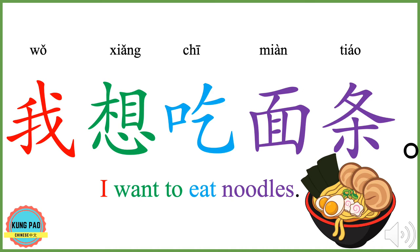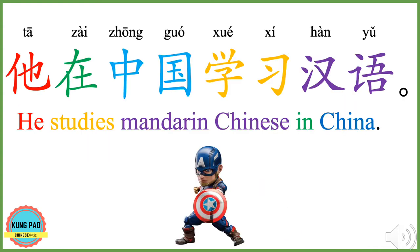我想吃面条。 我 means I or me. 想 here means want to. 吃 means to eat. 面条 means noodles. 我想吃面条 means I want to eat noodles.